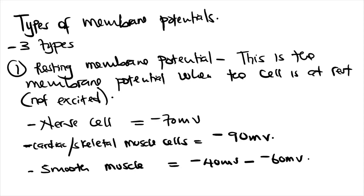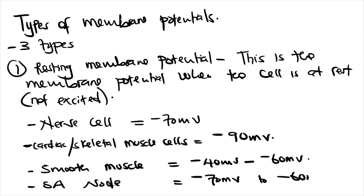The SA node, found in the cardiac muscle, has a resting membrane potential of about negative 70 to negative 60 millivolts — also variable. You must know the resting membrane potentials for the nerve cell, cardiac and skeletal muscle, smooth muscle, and SA node, as these are the important cells we'll discuss action potentials for.